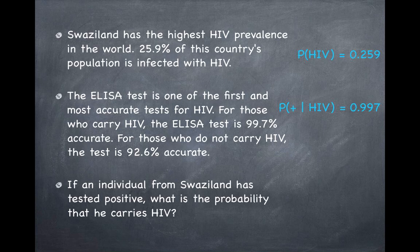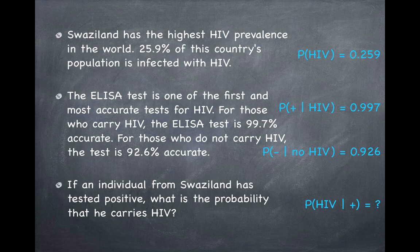On the other hand, accuracy in the case of a non-carrier really means that the test comes out negative. So the probability of a negative result, given that the person does not have HIV, is 0.926. Lastly, the question is asking us: if I know that a person has tested positive, what is the probability that they are an HIV carrier? Once again, a conditional probability — probability of HIV given positive.